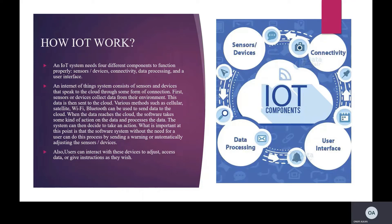Various methods such as cellular, satellite, WiFi, and Bluetooth can be used to send data to the cloud. When the data reaches the cloud, the software takes some kind of action on the data and processes it. The system can then decide to take an action. Without user input, the software system can do this process by sending a warning or automatically adjusting the sensors or device.